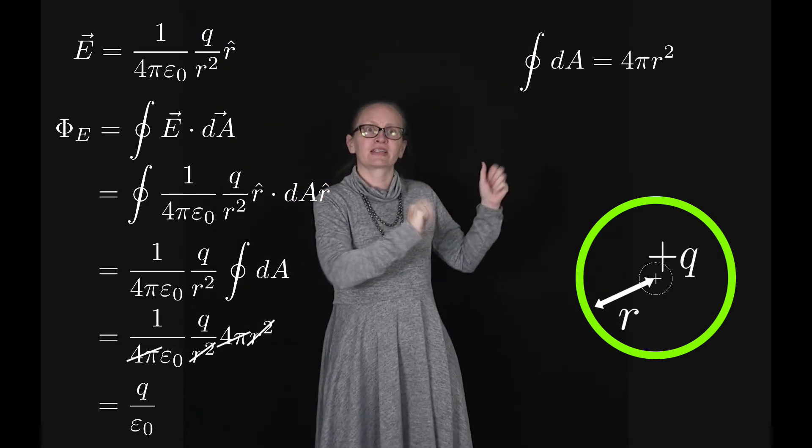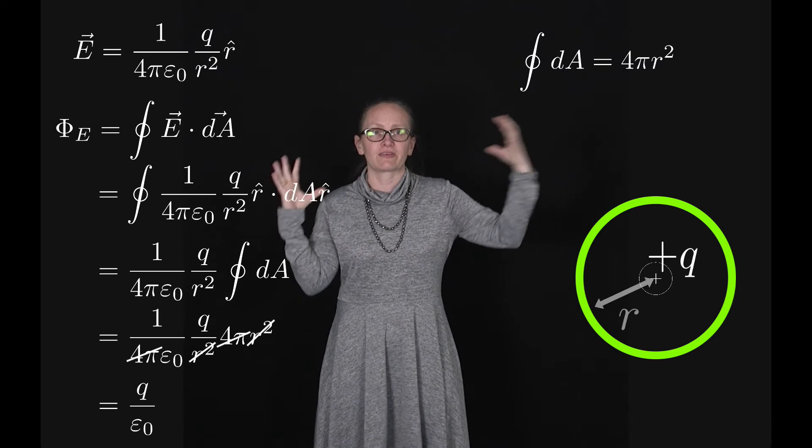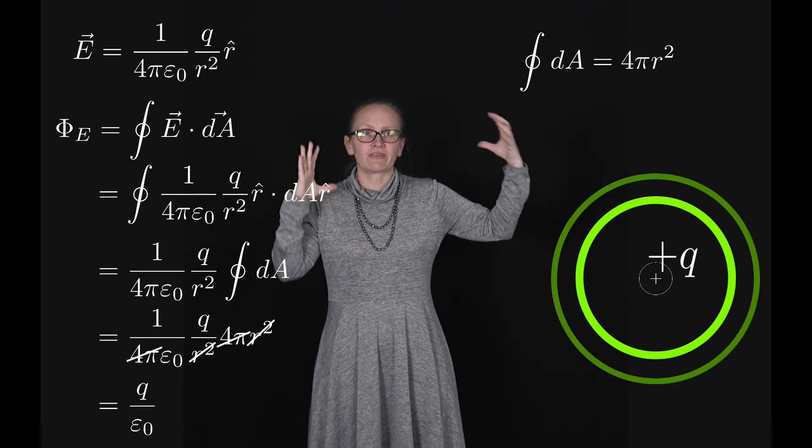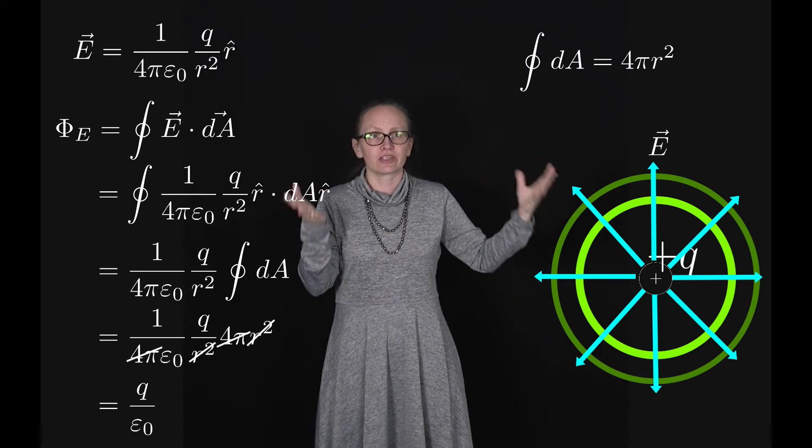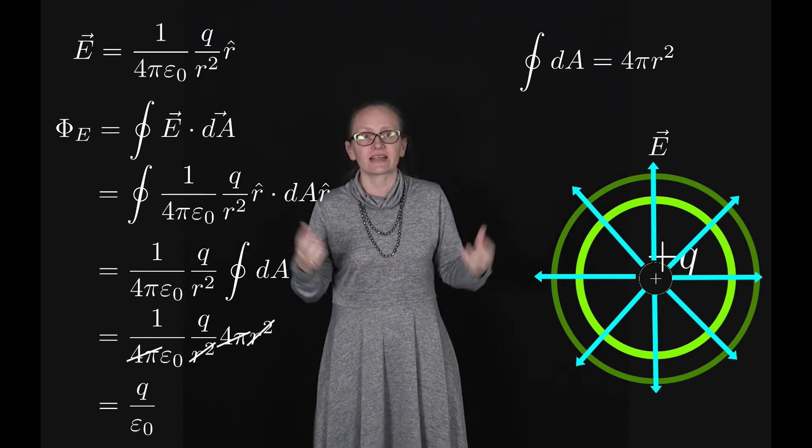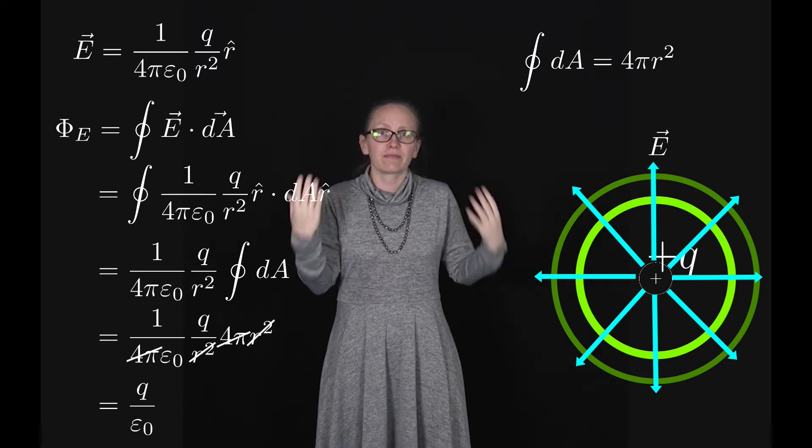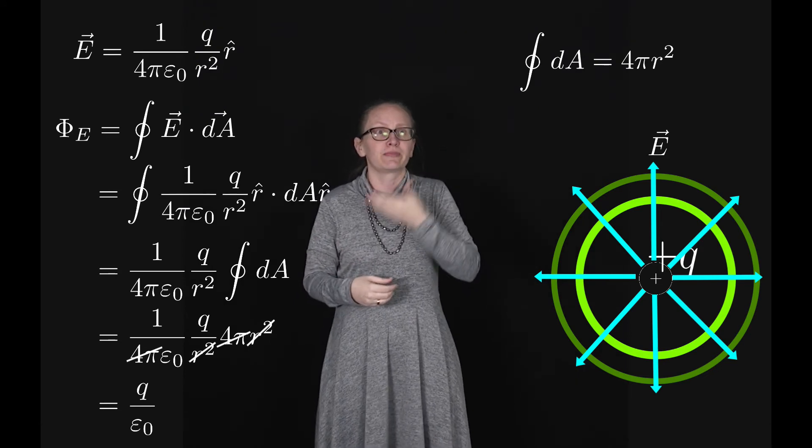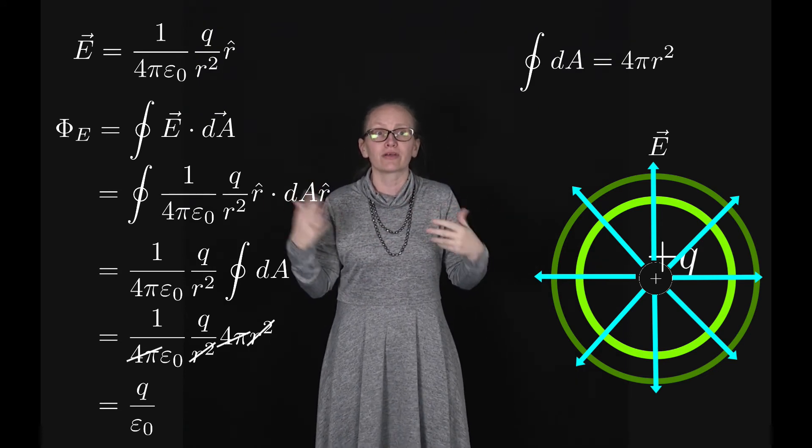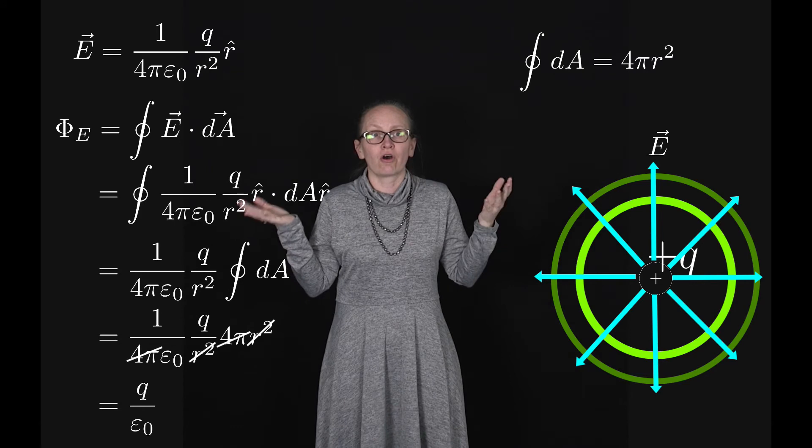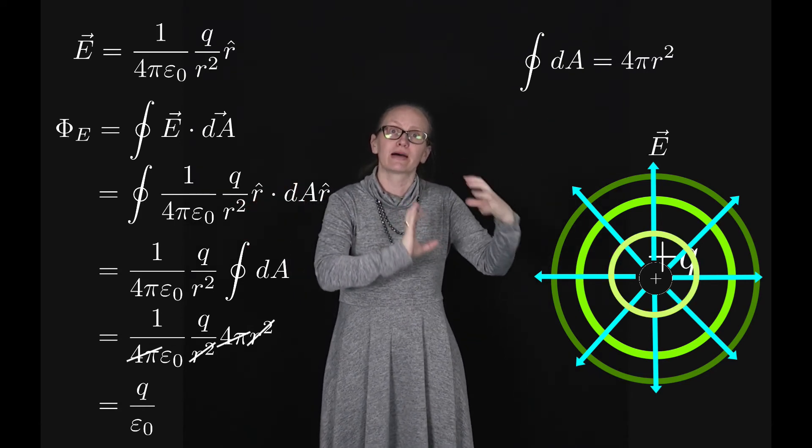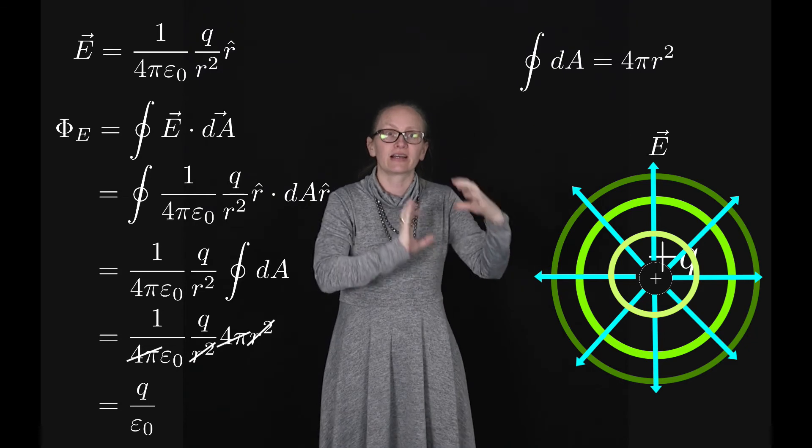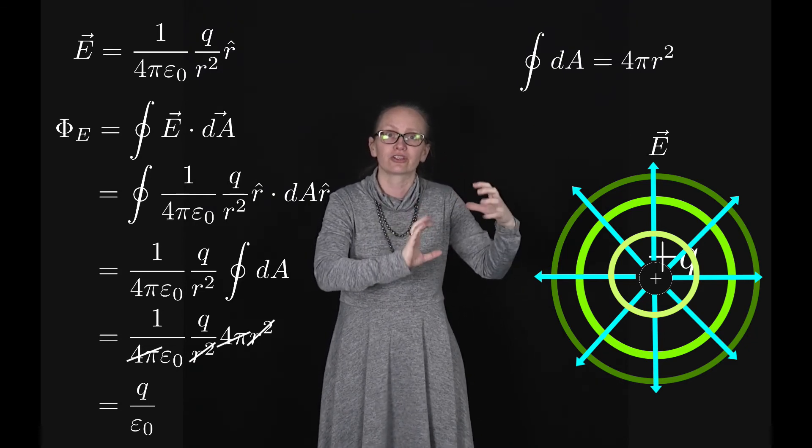We've done that for this one particular sphere, but let's now imagine making the sphere bigger. As we make the sphere bigger we've got the same number of electric field lines cutting through the sphere, so we would expect physically that the flux should not change. Mathematically our working supports this as the r terms, the radius, dropped out of that equation. Also if we make it smaller then we've still got the same number of field lines cutting through our surface and so the flux has not changed.